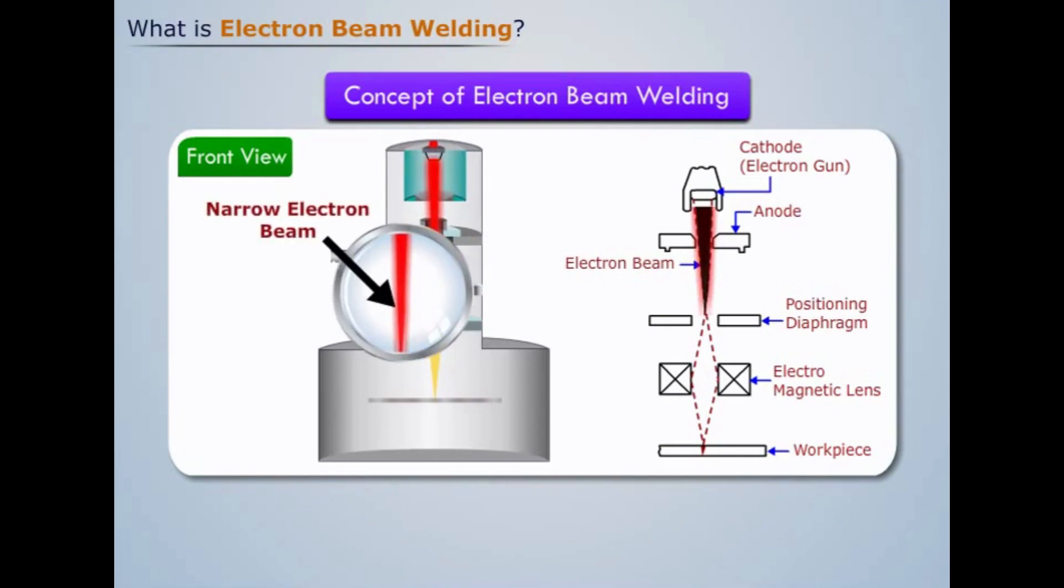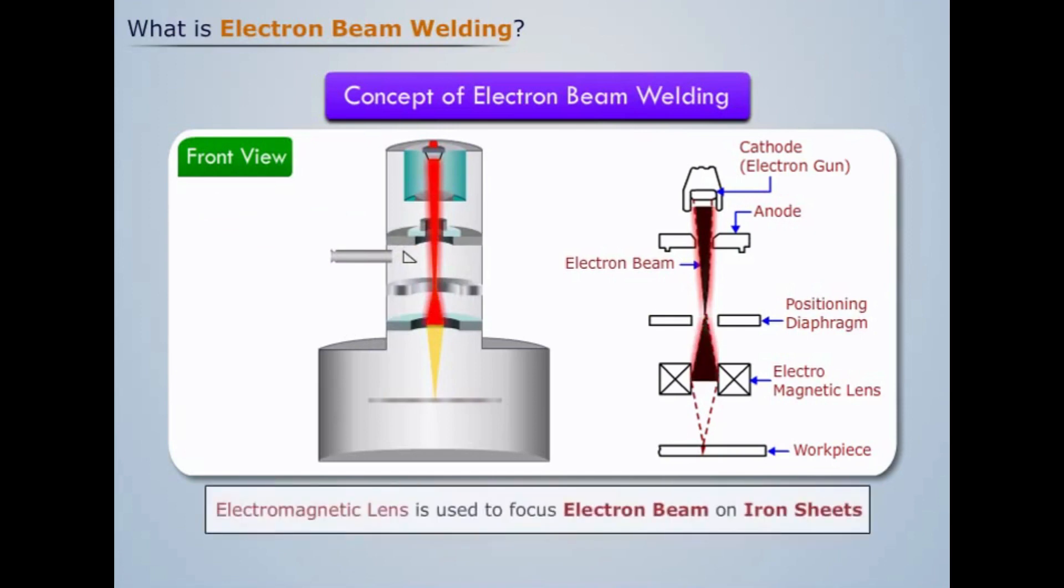However, we see that after the electron beam has crossed the positioning diaphragm, it begins to widen under the influence of electromagnetic lens. We use the electromagnetic lens to focus the electron beam on the iron sheets to be welded.